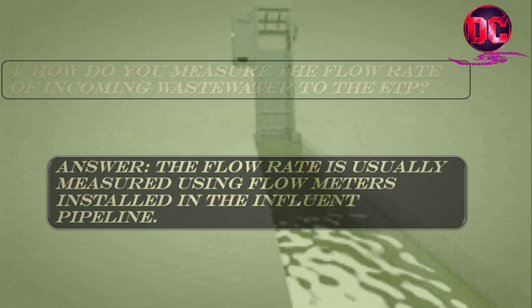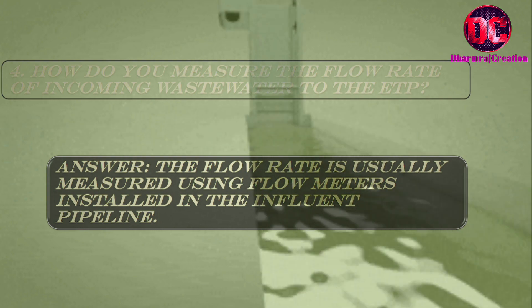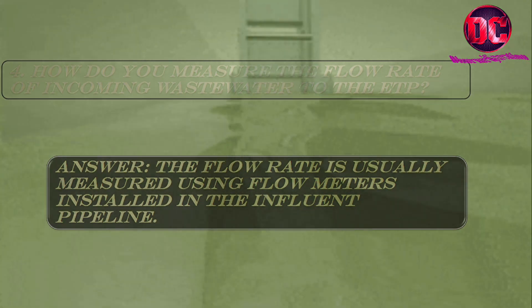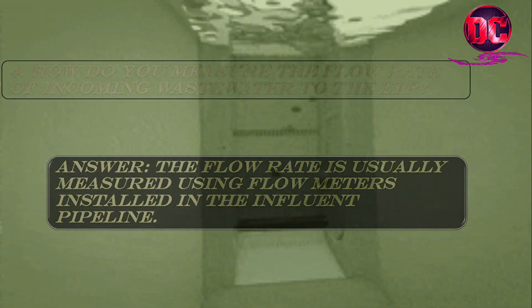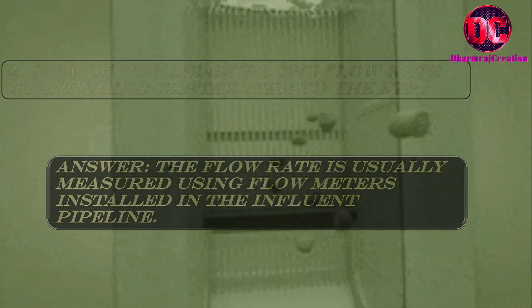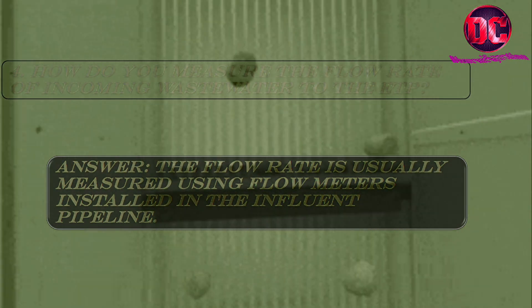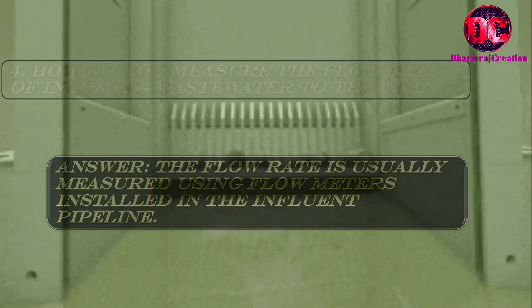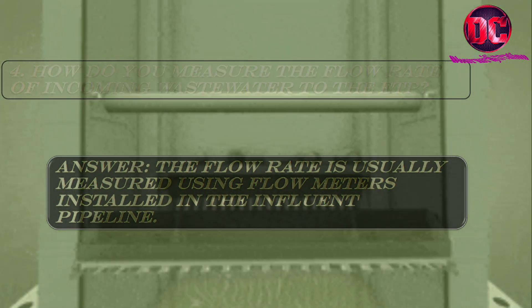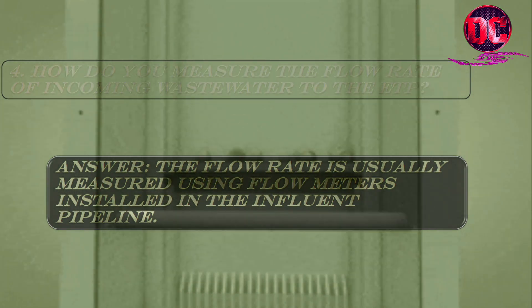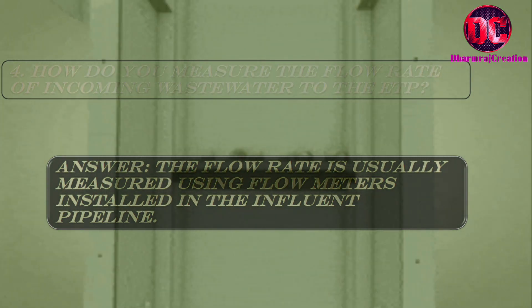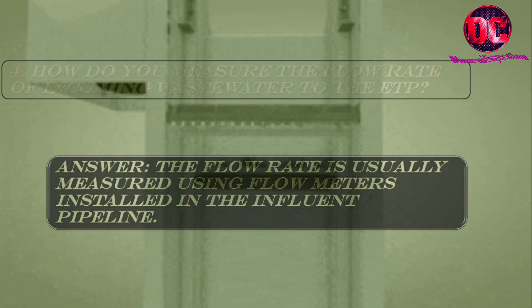4. How do you measure the flow rate of incoming wastewater to the ETP? Answer: The flow rate is usually measured using flow meters installed in the influent pipeline.